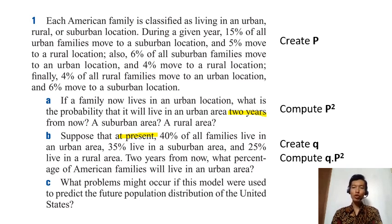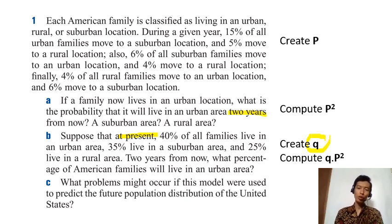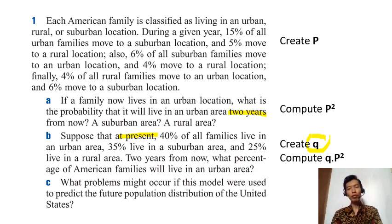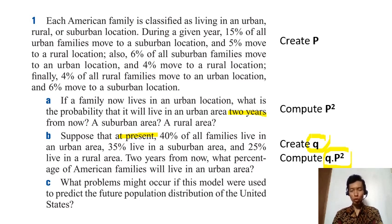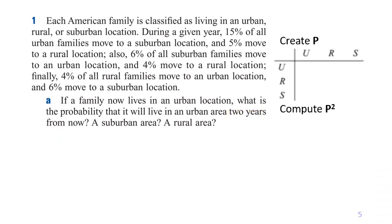For point B, it shows the distribution at this moment, so we need to create the vector q. It then asks what the distribution looks like two years from now, meaning we compute q times P squared. So first, let's create the transition probability matrix P.